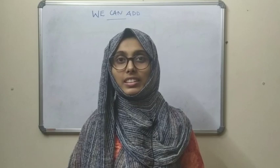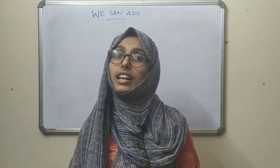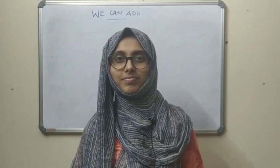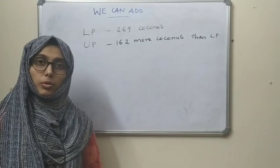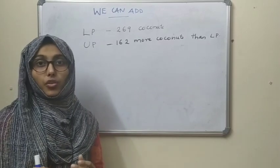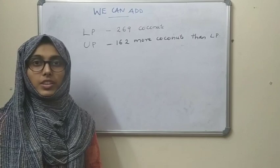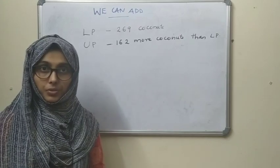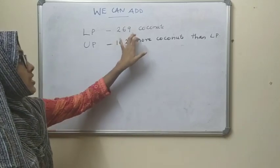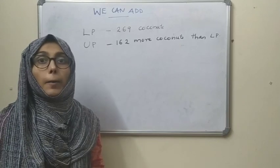Hello my dear students, how are you? We're back after a week. Today we are going to study the last part of our second chapter. In your textbook, as part of a sports meet, the LP section of the school — you know in school there will be an LP section and UP section — from the LP section the school got 269 coconuts for making pies.